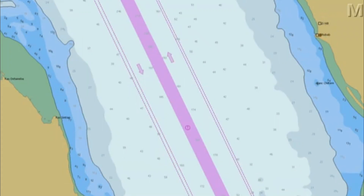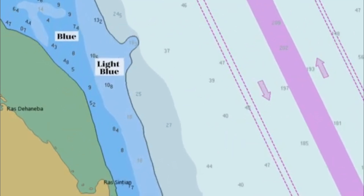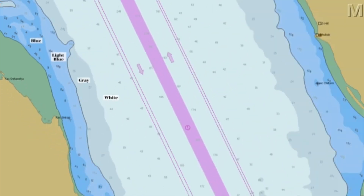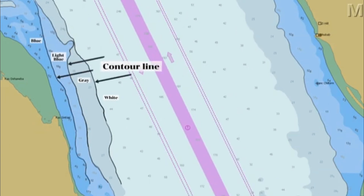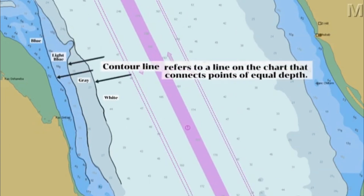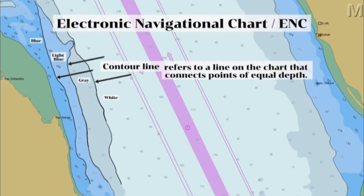As you can see in this ENC chart, the water is divided into four shades: blue, light blue, gray, and white. In between different shades, it is separated by a line that we call a contour line. A contour line refers to a line on the chart that connects points of equal depth. The electronic navigational chart displays these contour lines digitally to assist mariners in navigation and route planning, helping navigators identify areas of different depths and navigate safely through waterways.